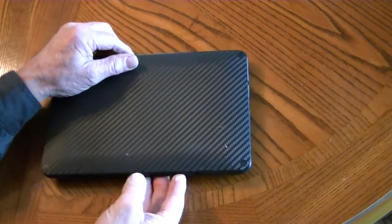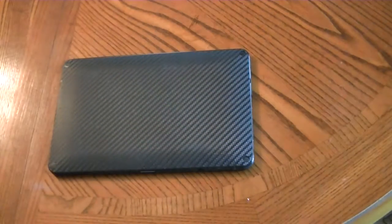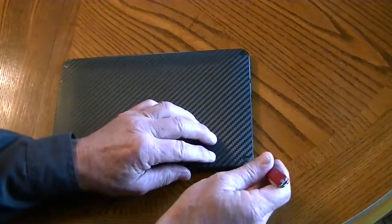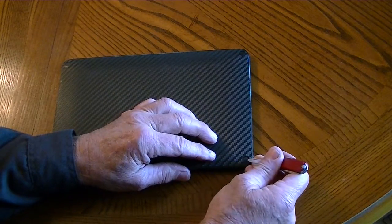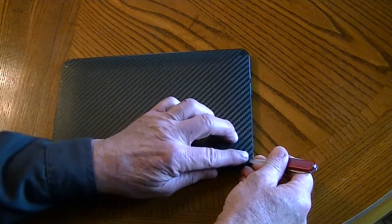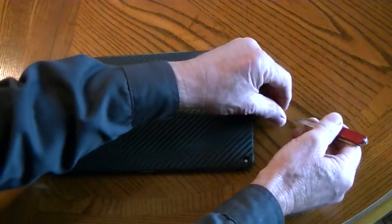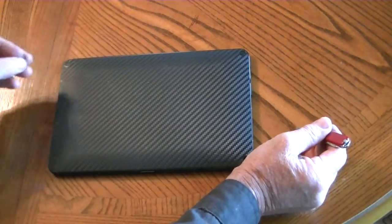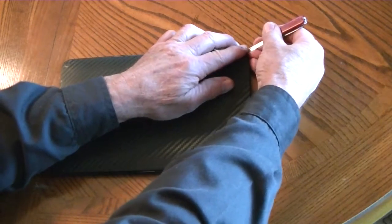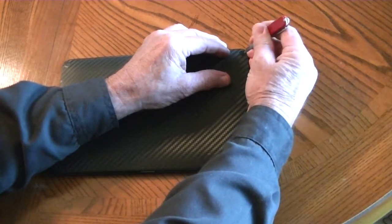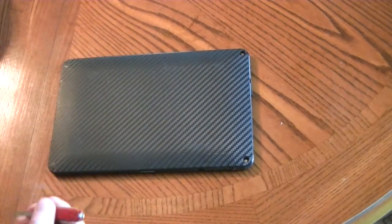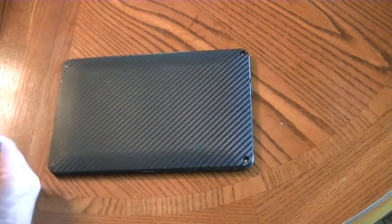I haven't had it apart before or seen anything about it, but I believe that most cases if you pop these little rubber feet off they will show a little screw underneath, so what we're going to do is take these four feet off and save them for later because we want to put them back.